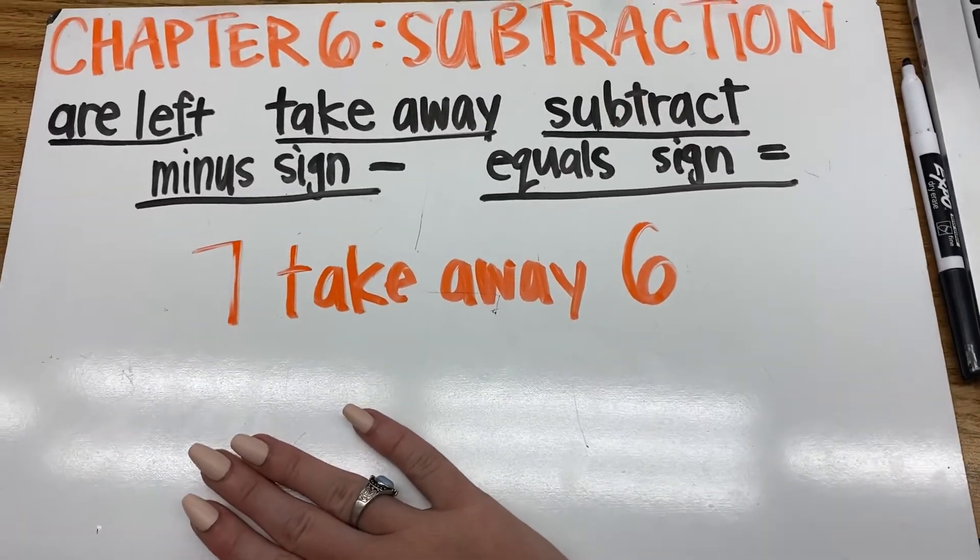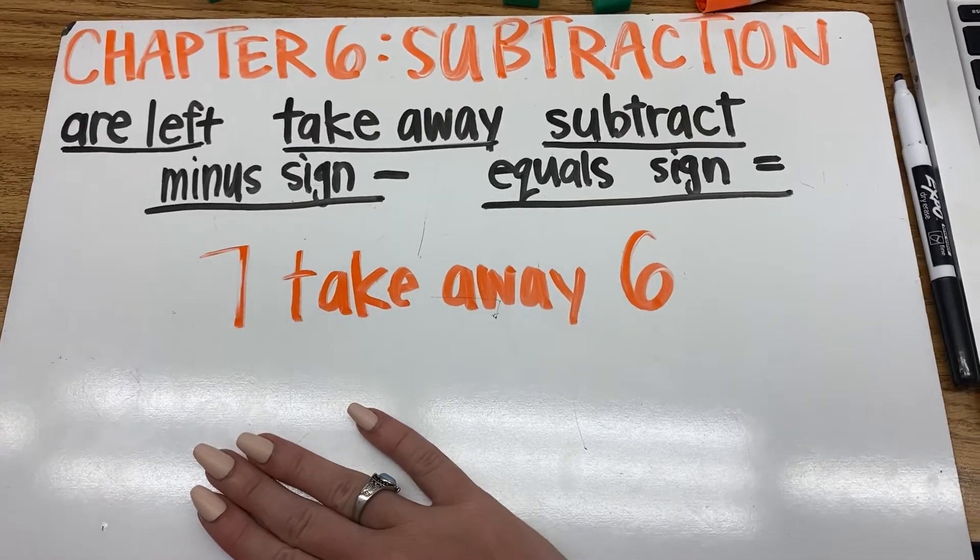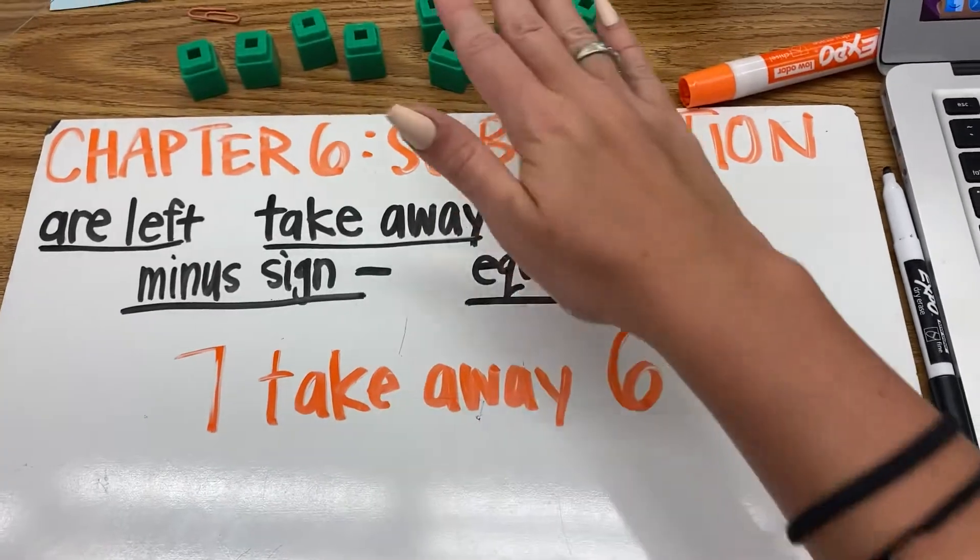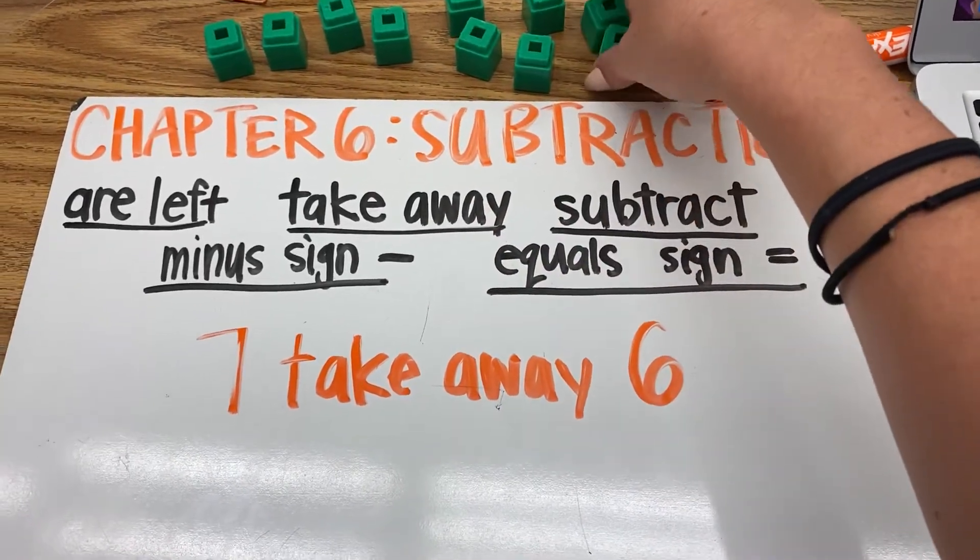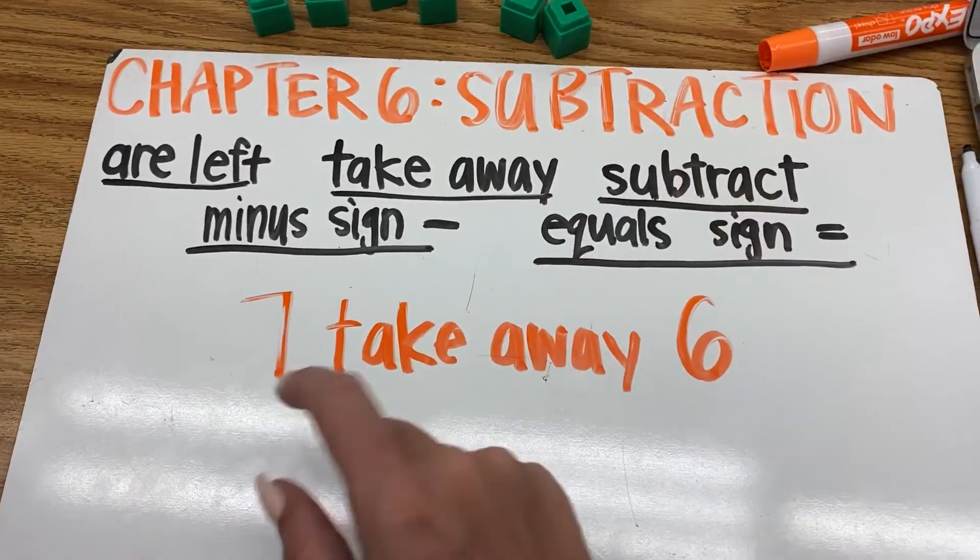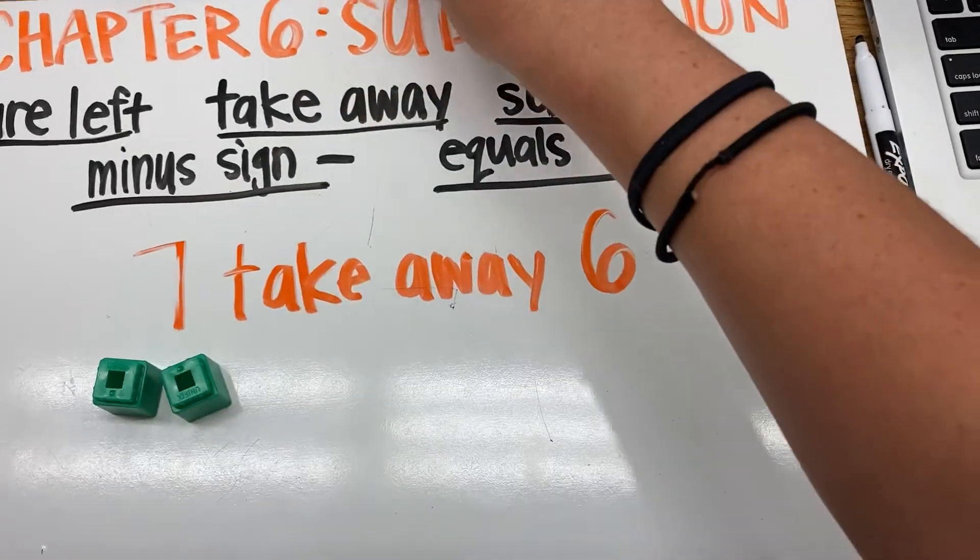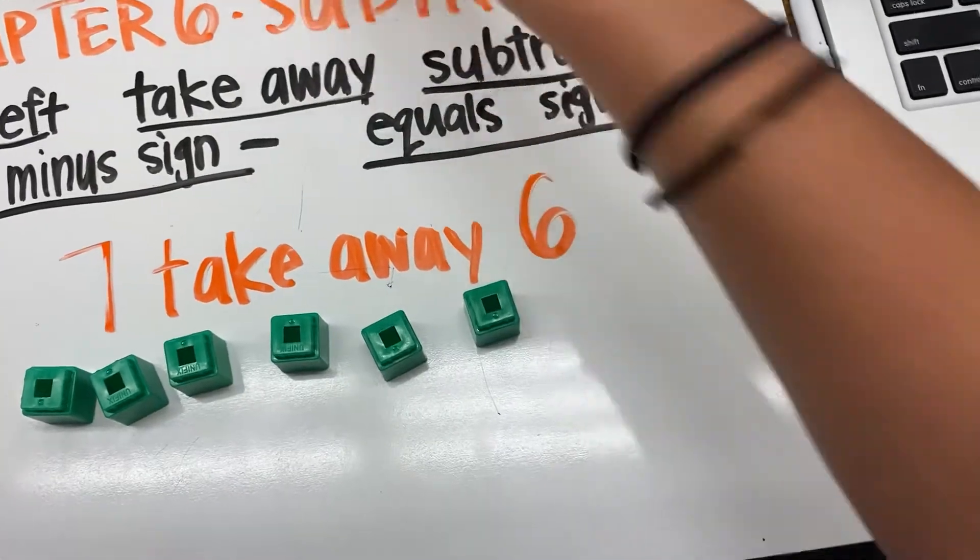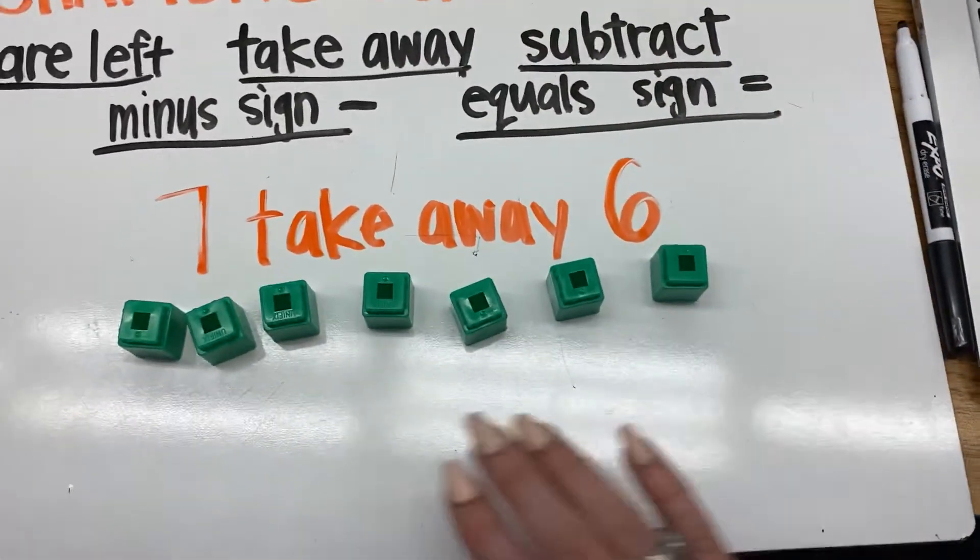So what you can do at home is you can get something. Remember, we talked about goldfish, I think, for addition. But you can use anything, any object. I'm going to use, of course, my cubes. So you want to get seven. That's our first number. Seven of whatever the object is. So we have one, two, three, four, five, six, seven. So we have seven.